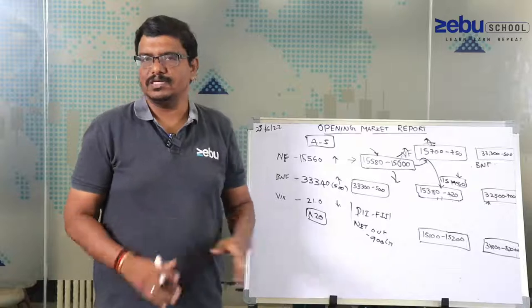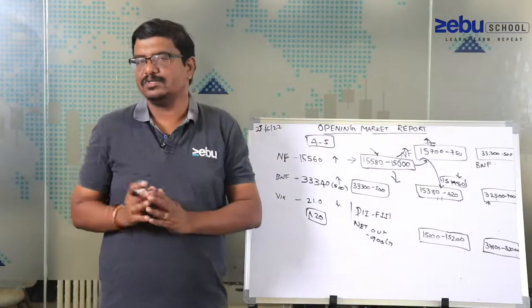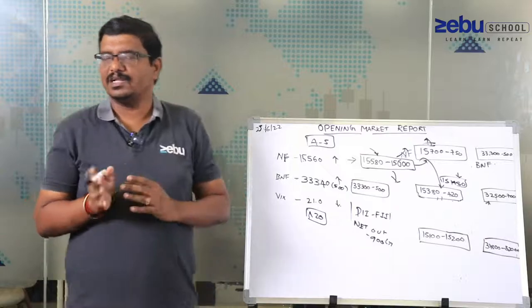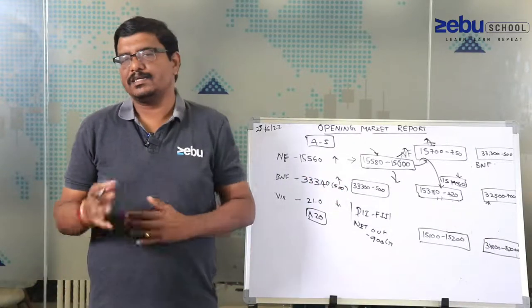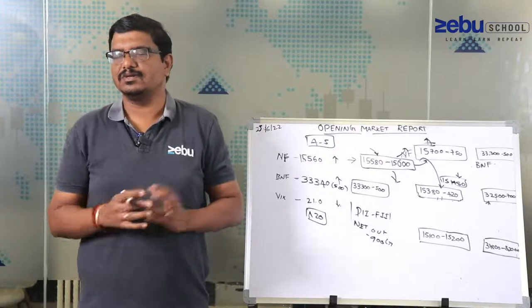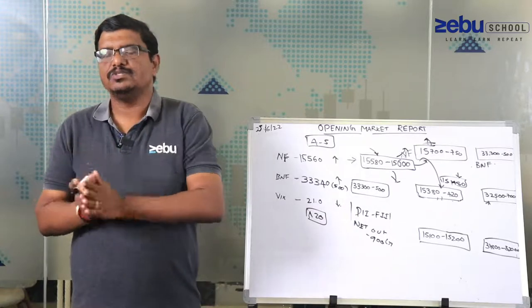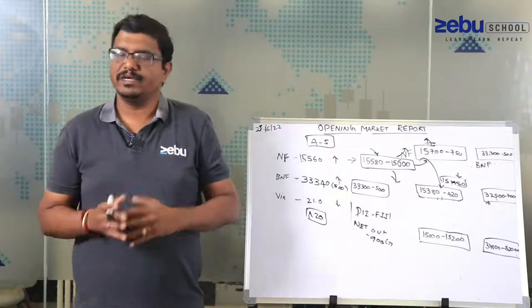This is what my view is for next four to five days, because next week also is a monthly expiry and moreover the last week expiry of the month. Expect some kind of volatility. Volatility doesn't mean it is going one direction, it is going to reverse, but only thing is whatever you may assume to happen or what you predict may not happen.